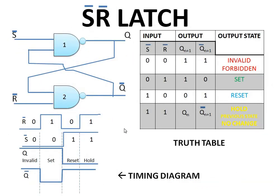The timing diagram for S̄R̄ latch: see the truth table — according to this we draw the waveform. R̄ values: 0, 1, 0, 1. S̄ values: 0, 0, 1, 1. According to the truth table: when both inputs are at zero it is an invalid state, keeping both Q and Q̄ at high state; when S̄ is zero and R̄ is one it is the set state; when S̄ is one and R̄ is zero it is the reset state; when both S̄ and R̄ are at high state it is the hold state.